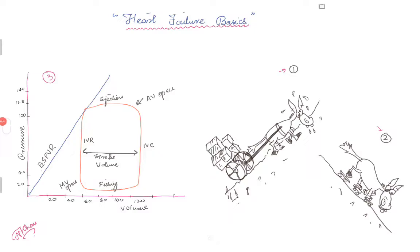I have drawn this picture of a donkey which is pulling a cart, trying to go uphill. If we think the donkey is the heart trying to push blood and working against blood pressure, this uphill represents your afterload. For example, if the blood pressure is 160 over 90, the donkey has to pull hard to go up a steep cliff — that is your afterload.